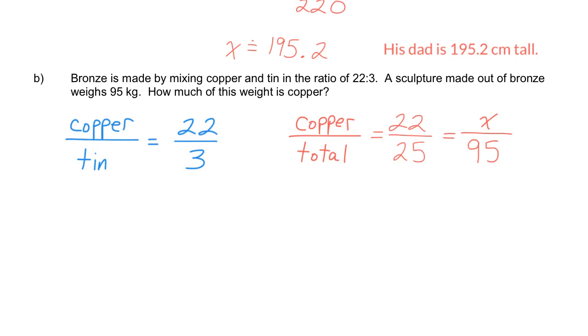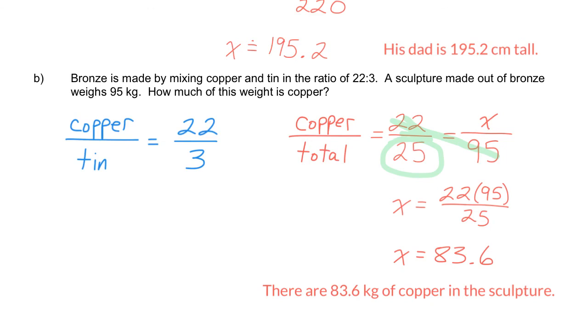To solve for x, we multiply the diagonals, 22 times 95, divide by the number left over, which is 25. So x equals 22 times 95, divided by 25, and that gets us an answer of 83.6. So, there are 83.6 kilograms of copper in the sculpture.